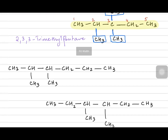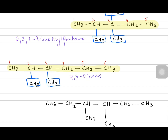For this next example, starting from the left you have six carbons: one, two, three, four, five, six. There's a methyl branch on carbon two and a methyl branch on carbon three, so it would be 2,3-dimethylhexane.